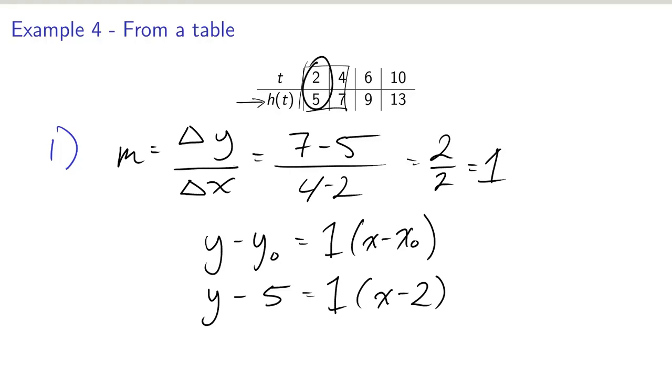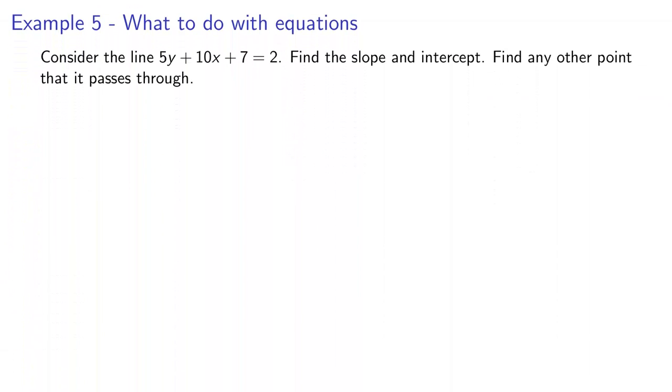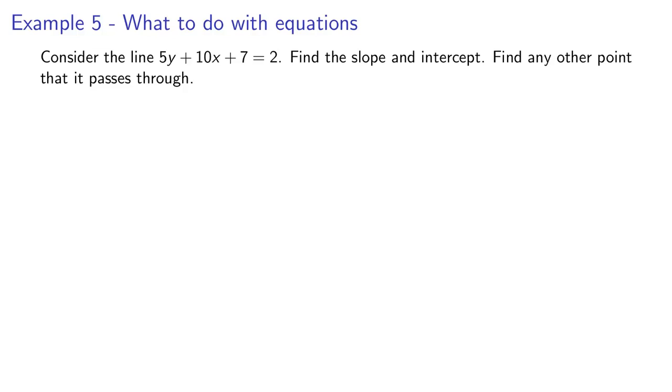The last thing we want to look at is, what if they give us some equation that doesn't really look like it might be a line, but they tell us it's a line and want us to find the slope and intercept? This is really just a lot of algebra, and our goal is to get it into that y = mx + b form. The big thing we want to do is move y onto its own side, get everything else on the other side. That's the first big step.